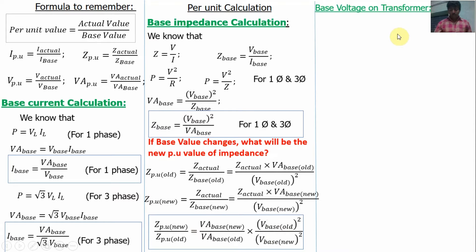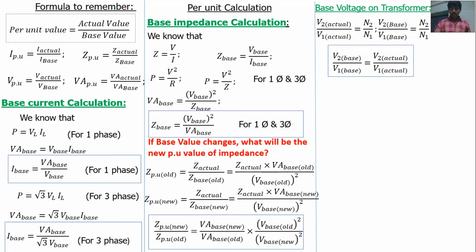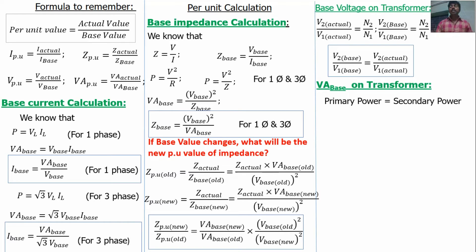For base values in a transformer: if the primary side base voltage is given, the secondary side base voltage is calculated using the turns ratio — V2 base divided by V1 base equals N2 divided by N1. So if V1 base is known, we calculate V2 base using this formula. Also, VA base on the primary side equals VA base on the secondary side of a transformer, since power is the same on both sides.